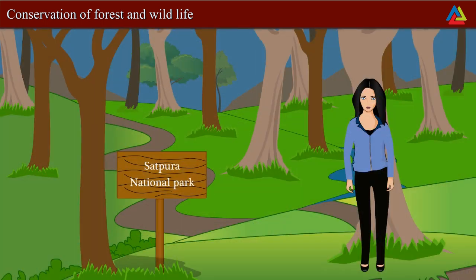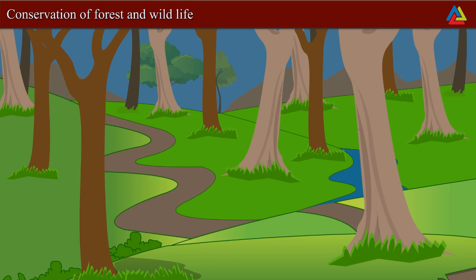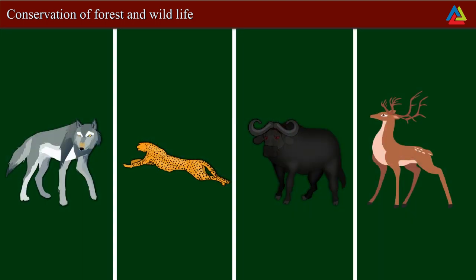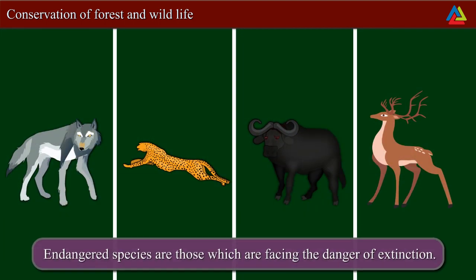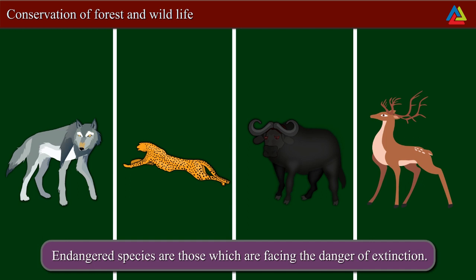Reserves like Satpura National Park are large and diverse — they protect whole sets of ecosystems. They preserve flora, fauna, land, landscape and historic objects of an area. There are some animals whose numbers are diminishing to a level that they might face extinction.